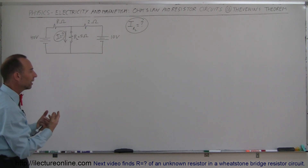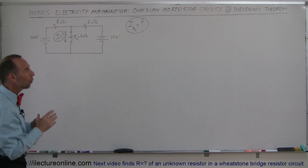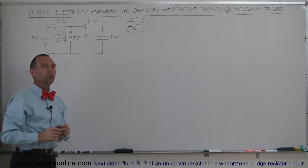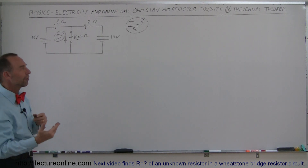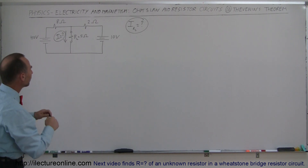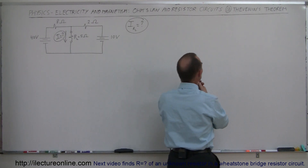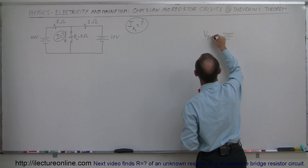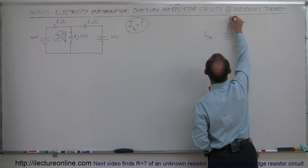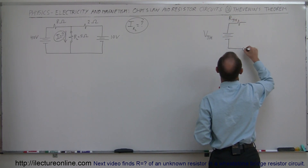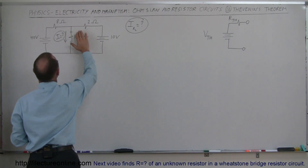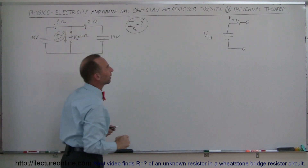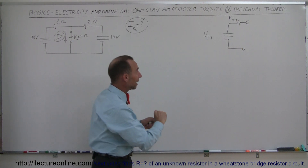What Thevenin's Theorem does is reduce this circuit into an equivalent circuit where we attach the load resistor, making it really easy to find the current through it. The end goal is to end up with an equivalent voltage — called the Thevenin voltage — and an equivalent resistance called the Thevenin resistance. This becomes the replacement circuit for everything except the load resistor. That whole rest of the circuit is replaced by this simple circuit, and then we just attach the load resistor to it.